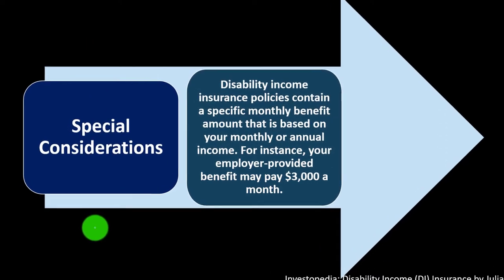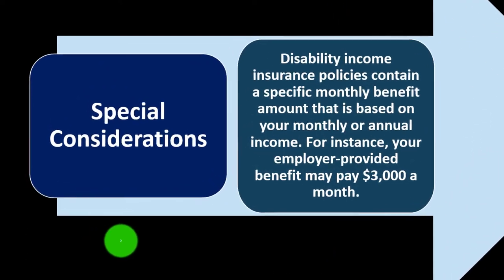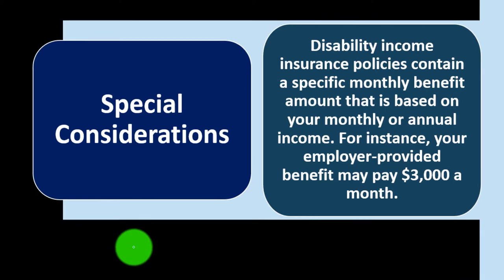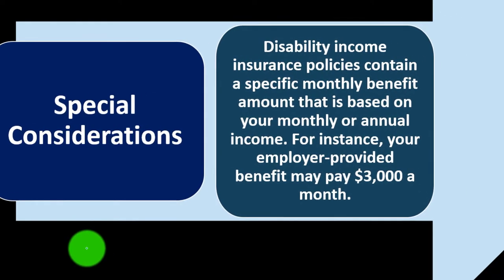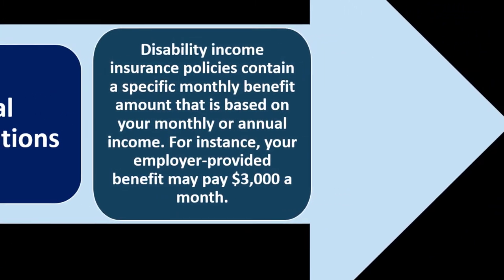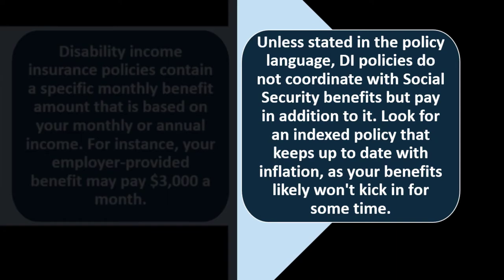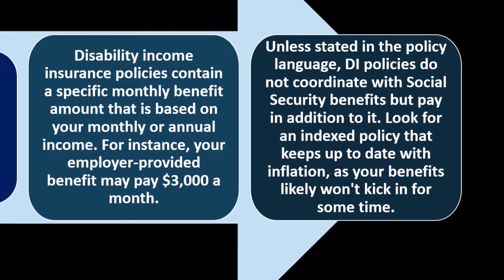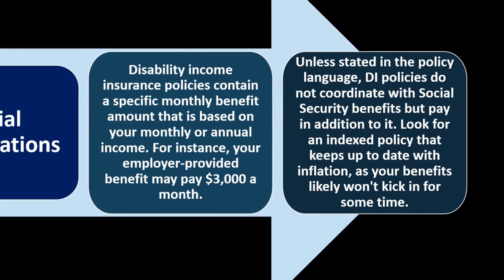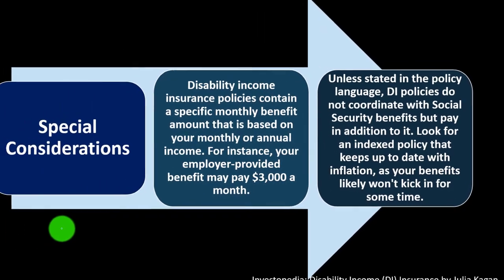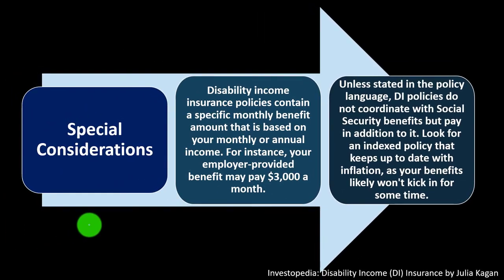Disability income insurance policies contain a specific monthly benefit amount based on your monthly or annual income. For instance, your employer-provided benefit may pay $3,000 a month. Unless stated in the policy language, DI policies do not coordinate with Social Security benefits but pay in addition to it. Look for an index policy that keeps up to date with inflation, as your benefits likely won't kick in for some time.